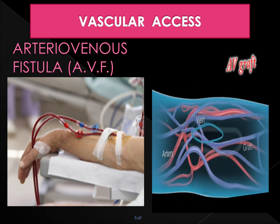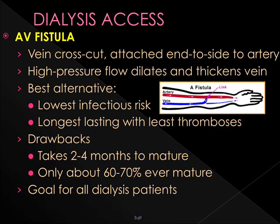For patients undergoing long-term maintenance hemodialysis, we plan an arteriovenous fistula or an arteriovenous graft. Whenever possible, an AV fistula should be given the option. The vein is cut and attached end-to-side to the artery — usually the radial artery and cephalic vein at the wrist. The high pressure in the artery dilates and thickens the vein. It has low infection risk and a longer life with least thrombosis. The drawback is that it takes 2 to 4 months for the vein to mature, with a maturity rate of around 60 to 70%, but it is ideal for all patients undergoing maintenance hemodialysis.